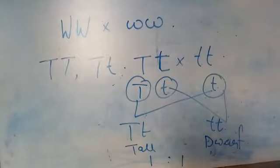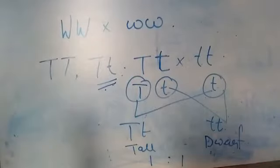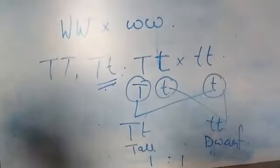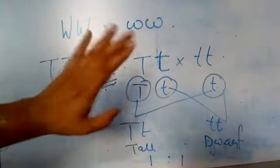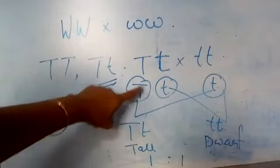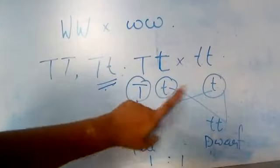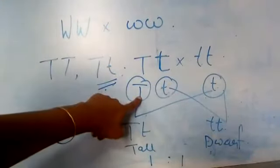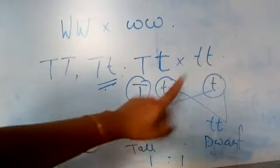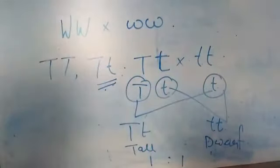It is the cross between the F1 generation and the recessive parent. The F1 generation always has a heterozygous genotype, and the recessive parent's genotype is small t small t. The heterozygous plant can produce two different types of gametes: capital T and small t. The recessive parent can produce only one type of gamete, that is small t.